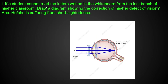If a student cannot read letters on a board, the person is short-sighted. That person cannot see distant objects clearly. Short-sightedness requires correction using a concave lens.